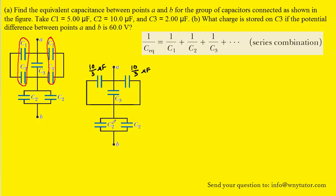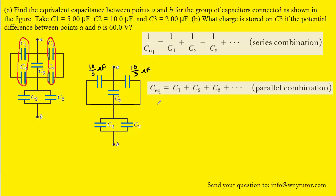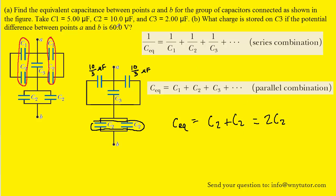When capacitors are in parallel, they follow the equation where we can simply add together the individual capacitances to find the equivalent capacitance. So combining these two capacitors, since they are indeed in parallel, we sum the two capacitances: C2 plus C2, or 2C2. The question tells us that C2 equals 10 microfarads, so we have 2 multiplied by 10 microfarads, which is 20 microfarads. So this becomes the equivalent capacitance for the capacitors marked C2 and C2.